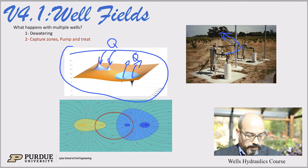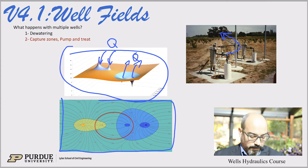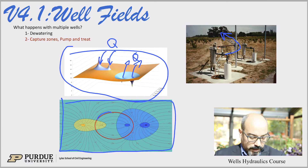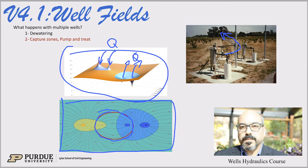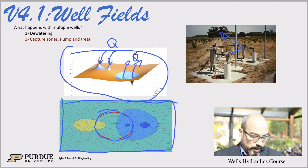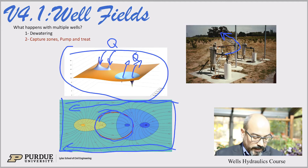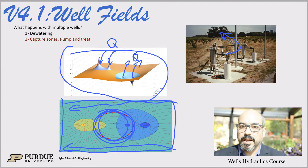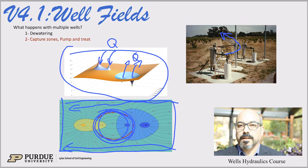Looking at the bottom, this is a top view of the same system. If we look at it from the top down, you can see that in the middle we have a completely isolated cell where the regional groundwater is not affected. This cell is completely isolated from the regional groundwater, and therefore we can treat that water — it's not polluting the regional aquifer anymore.